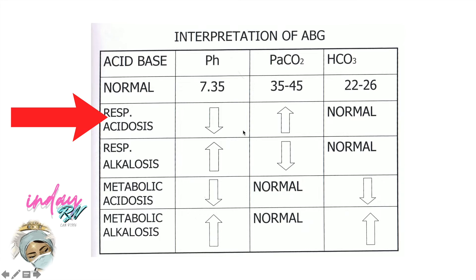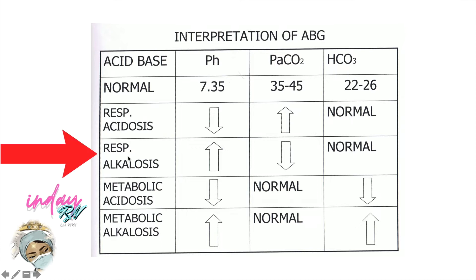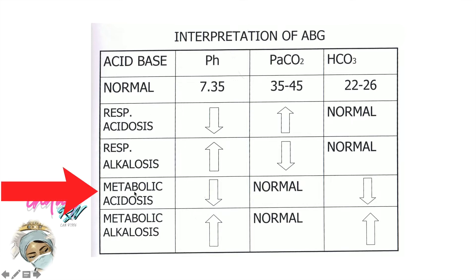For respiratory acidosis, it is always unequal. Therefore, the pH is low and paCO2 is high, while the bicarbonate is normal. For respiratory alkalosis, it is the opposite of acidosis. And for metabolic acidosis, always note that if we talk about metabolic, pH and bicarbonate are always in the same direction, while the paCO2 is normal.